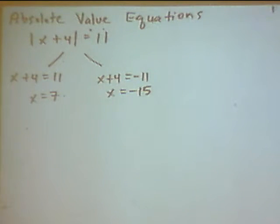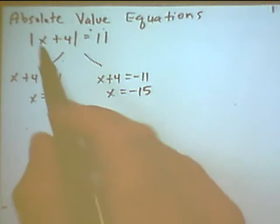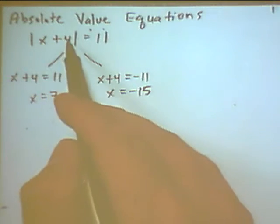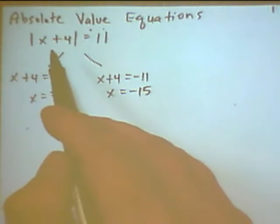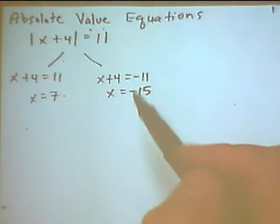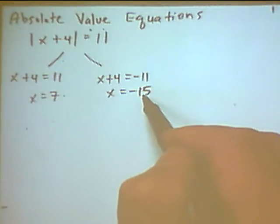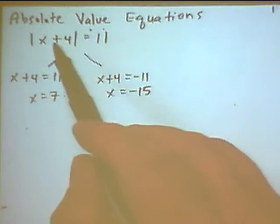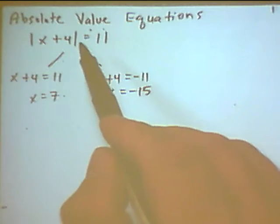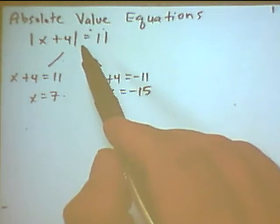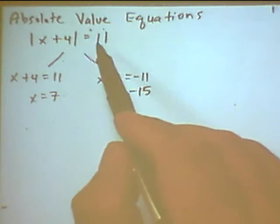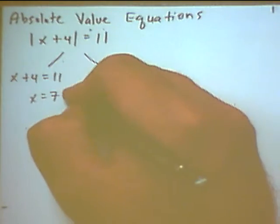And I can check if I plug 7 into the original equation. 7 plus 4 is 11. Absolute value of 11 is 11. So that's the solution. Minus 15, if I plug it into the original equation. Minus 15 plus 4 is negative 11. But the absolute value of negative 11 is 11. So these both check out.